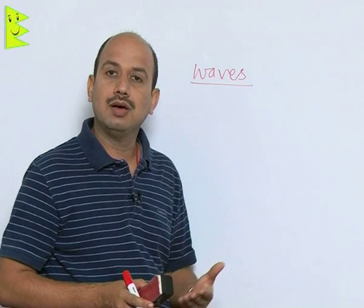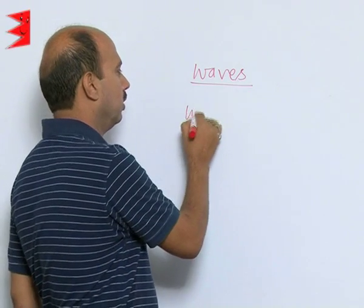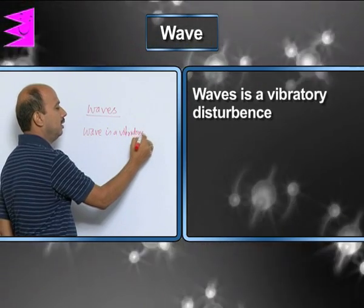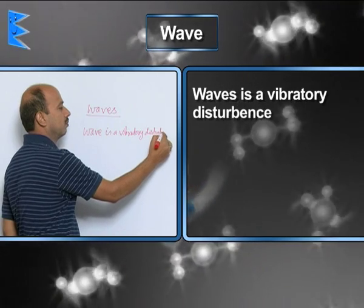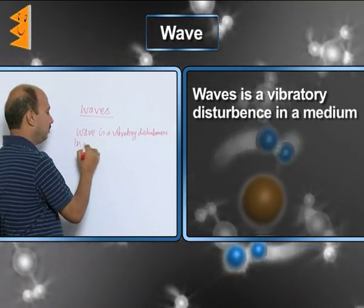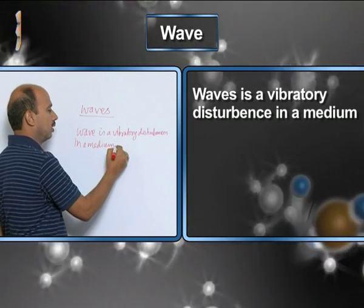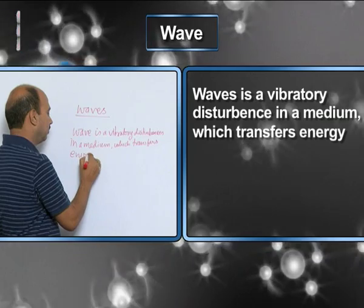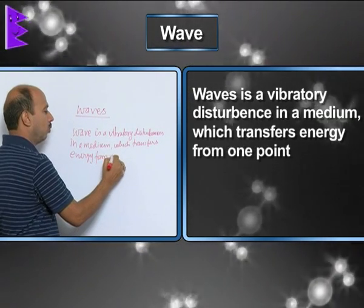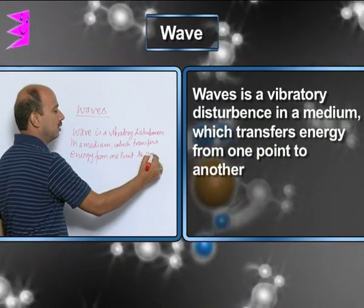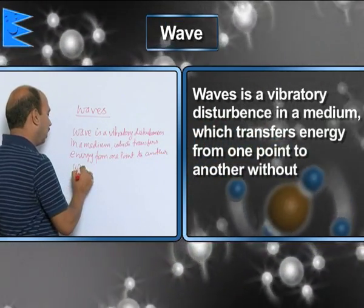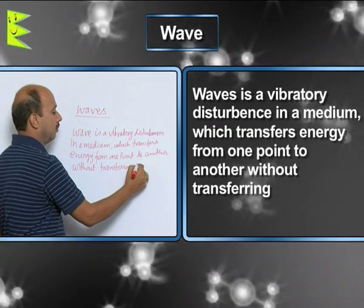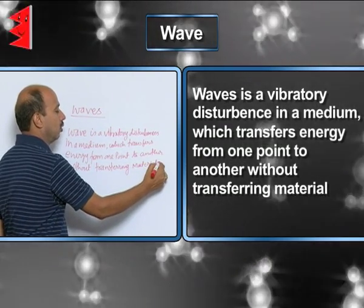Wave is a vibratory disturbance in a medium. We can write here actually: wave is a vibratory disturbance in a medium which transfers energy from one point to another, to another, without transferring material of the medium.